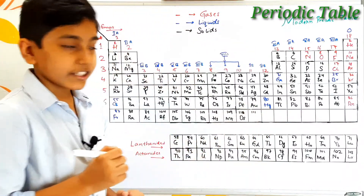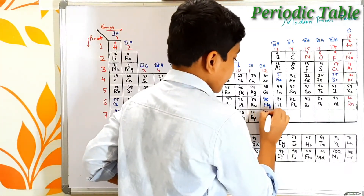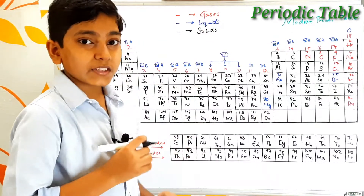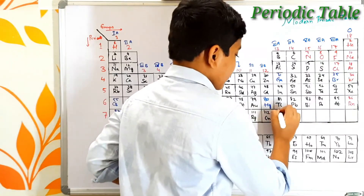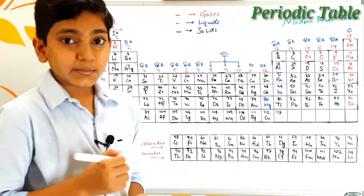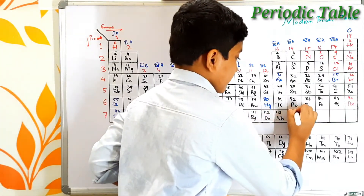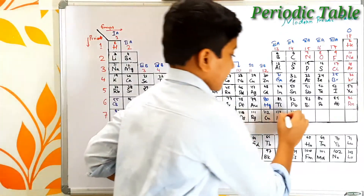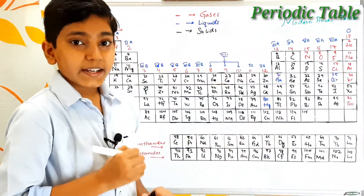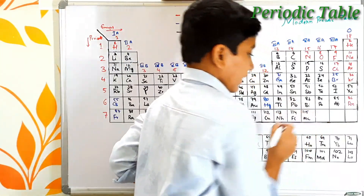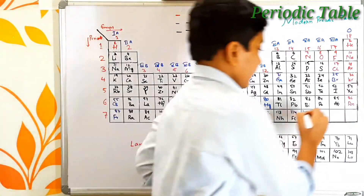Atomic number 110 is darmstadtium — its symbol is Ds. Atomic number 111 is roentgenium — its symbol is Rg. Atomic number 112 is copernicium — its symbol is Cn, named after the famous astronomer Copernicus. Atomic number 113 is nihonium — its symbol is Nh. Atomic number 114 is flerovium — its symbol is Fl. Atomic number 115 is moscovium — its symbol is Mc, named after the city of Moscow in Russia.